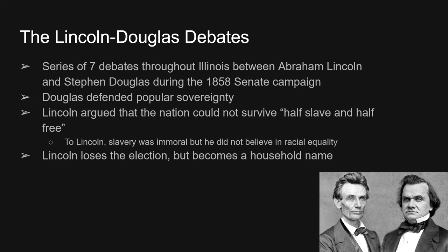In 1858, Abraham Lincoln runs for Senate and he and Stephen Douglas give a very famous set of debates throughout Illinois, one for each of their congressional districts. Stephen Douglas defends popular sovereignty, while Lincoln argues that the United States cannot survive half slave and half free. These two debates are very heavily covered throughout the state and the country. Lincoln personally sees slavery as immoral, but he does not in any way believe in racial equality. Also, Lincoln's day job is as a constitutional lawyer, and he recognizes that slavery can't just be changed — a constitutional amendment must be passed. Ultimately, Abraham Lincoln loses the election. Stephen Douglas retains his Senate seat, but Lincoln becomes a household name.